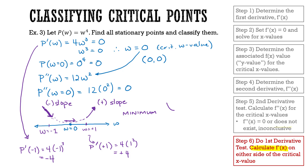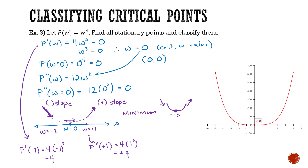The shape confirms a minimum because I have a negative slope below the critical value, the slope is 0 at the critical value, and the slope is positive above the critical value. And indeed, that's what I find when I look at the graph — we can see this is a minimum at (0, 0). So the critical point (0, 0) is a minimum.